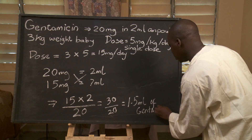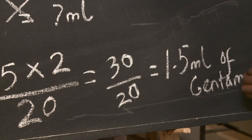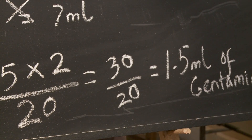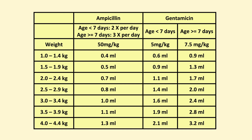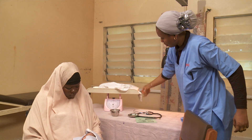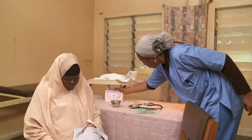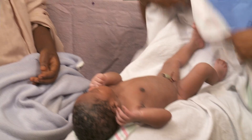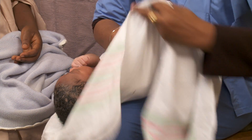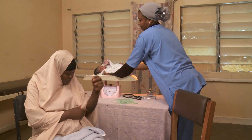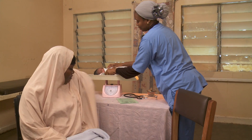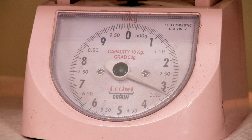Calculating dosages accurately takes time and good math skills. For busy health workers, using a dosage guideline saves time and reduces mistakes. Doses for babies are calculated according to the baby's weight. Start with getting an accurate weight for the sick baby. This baby weighs 3.2 kilos.